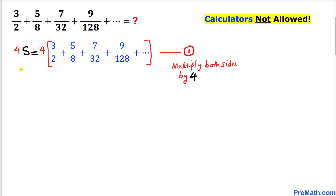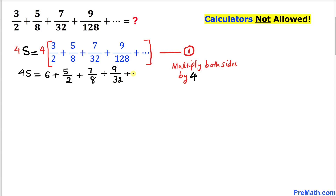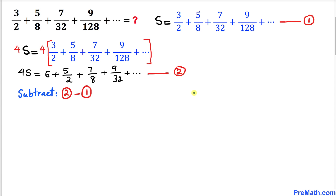Now let's go ahead and distribute this 4 across the board. On the left hand side we still have 4s. When we multiply 4 times 3 over 2, that becomes 12 over 2 which is 6. Then 4 times 5 over 8 gives us 5 over 2, plus 7 divided by 8, plus 9 divided by 32, and so on. Let me call this equation number two.